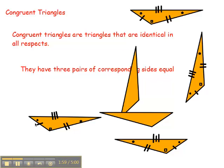For example, comparing this one and this one. Single hash, single hash. Double hash, double hash. Triple hash, triple hash. Three pairs of corresponding angles equal.